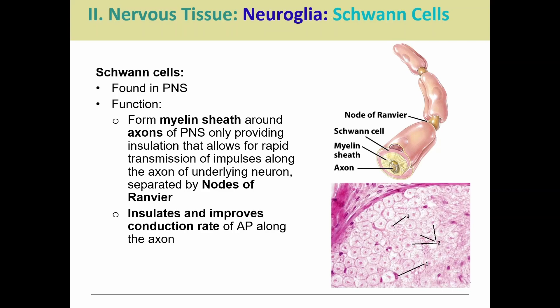So those are our six neuroglia. You should be able to tell at least what each one does and which part of the nervous system they're found in.